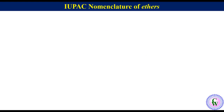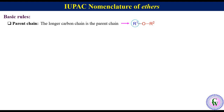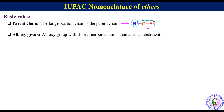These are the basic rules. First is regarding parent chain. An ether molecule has two R groups. The R group with the longer carbon chain is treated as the parent chain. Second is the alkoxy group — the alkoxy group with the shorter carbon chain is treated as a substituent.